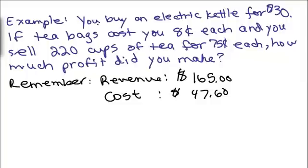Here's an example: You buy an electric kettle for $30, tea bags cost you 8 cents each, and then you sell 220 cups of tea for 75 cents each. How much profit did you make?